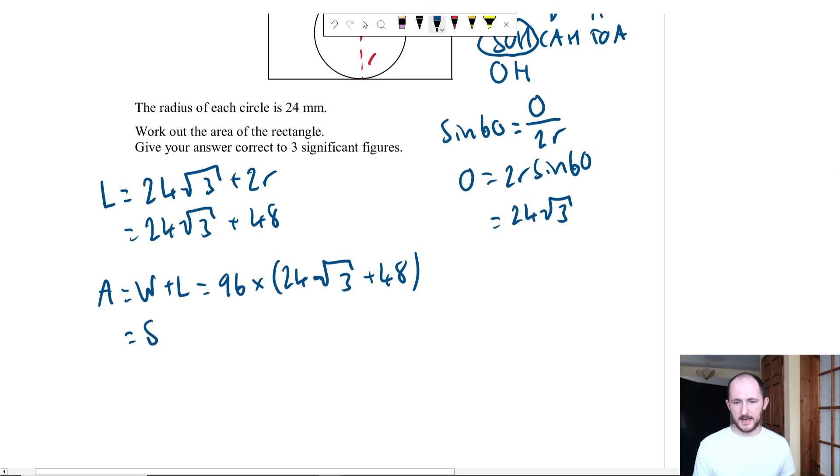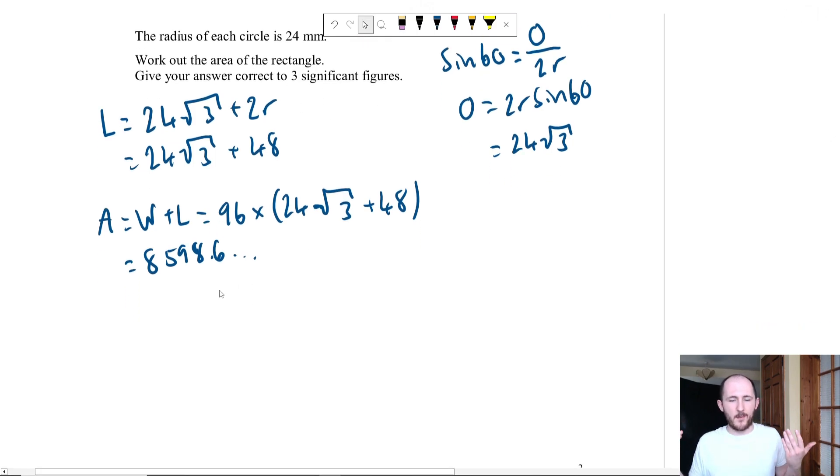So we're actually up to three out of the four marks at the moment nine eight point six dot dot dot but it says to three significant figures so this is another point where they might kind of trip you up. You're looking at this nine here the number next to it is bigger than five oh it's five or bigger so we're going to round up so that gives me 8600 millimeters squared to three significant figures.